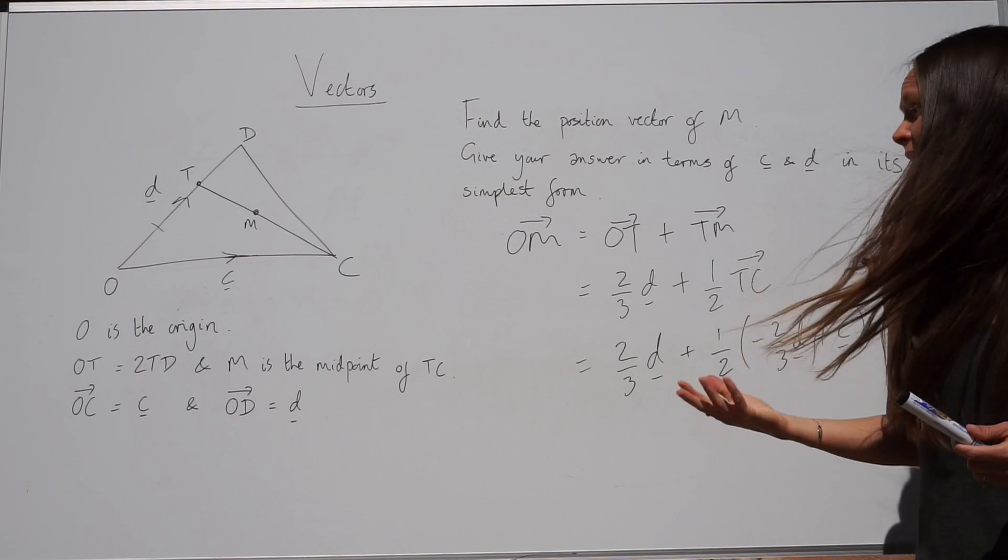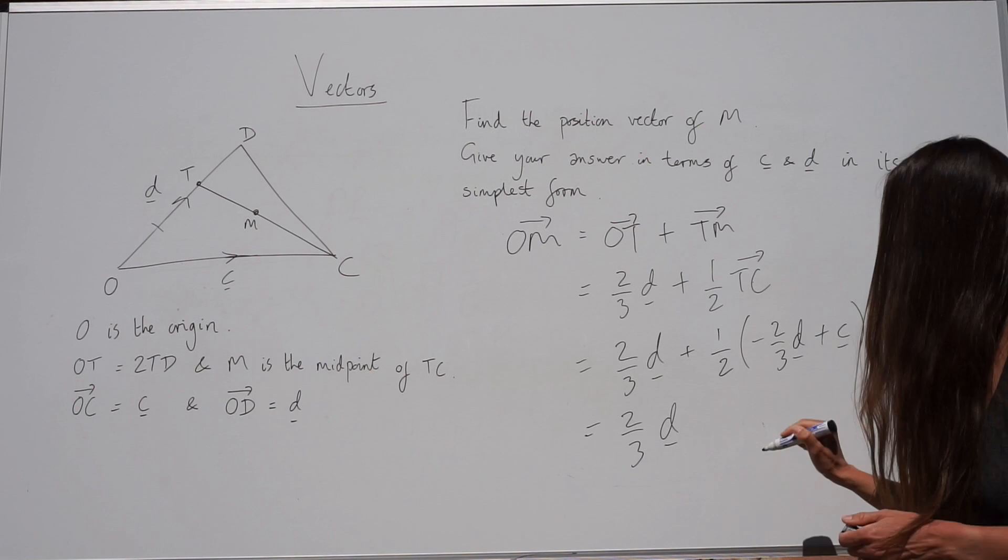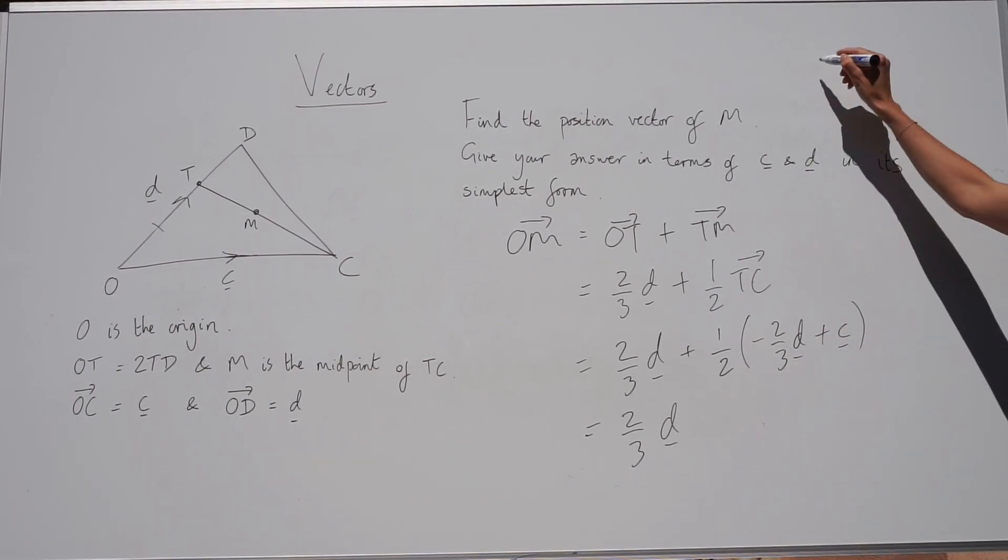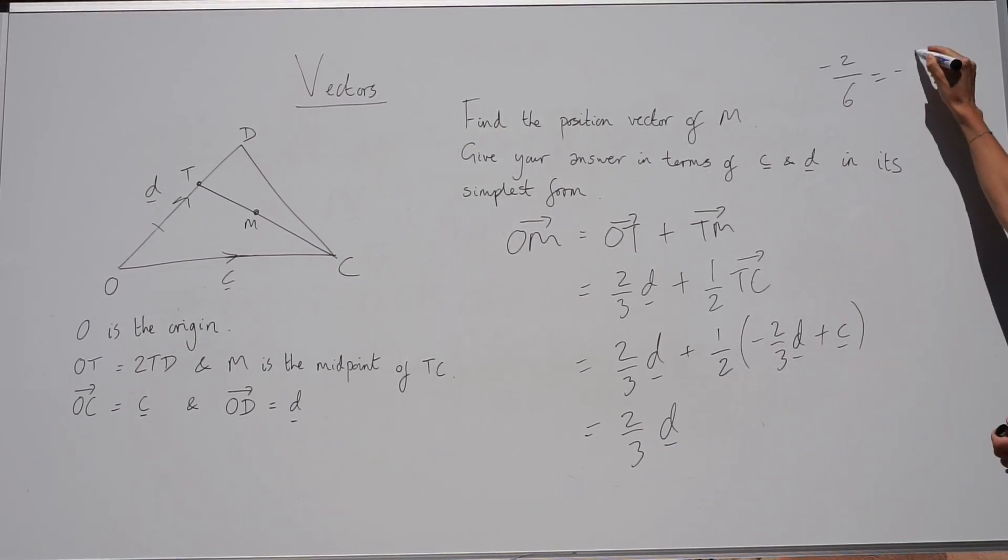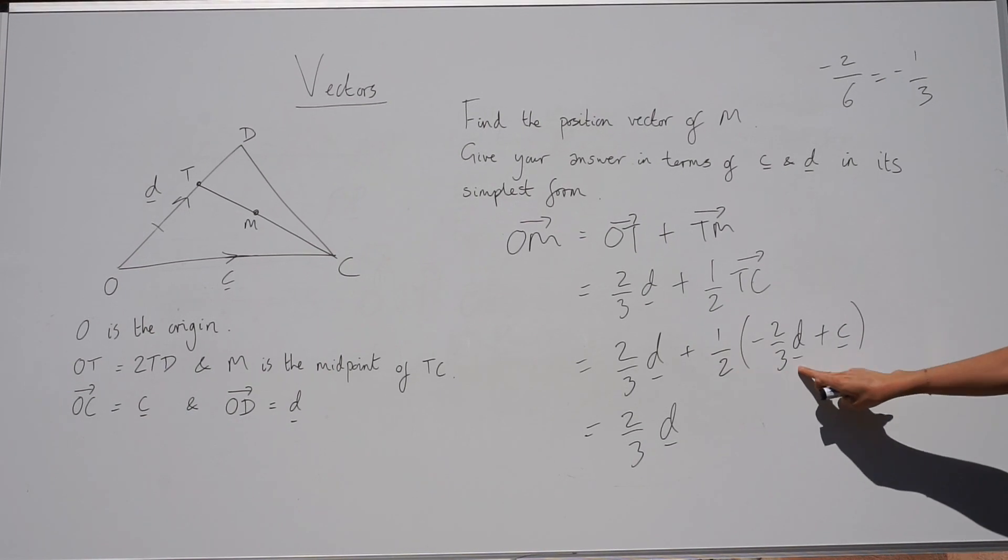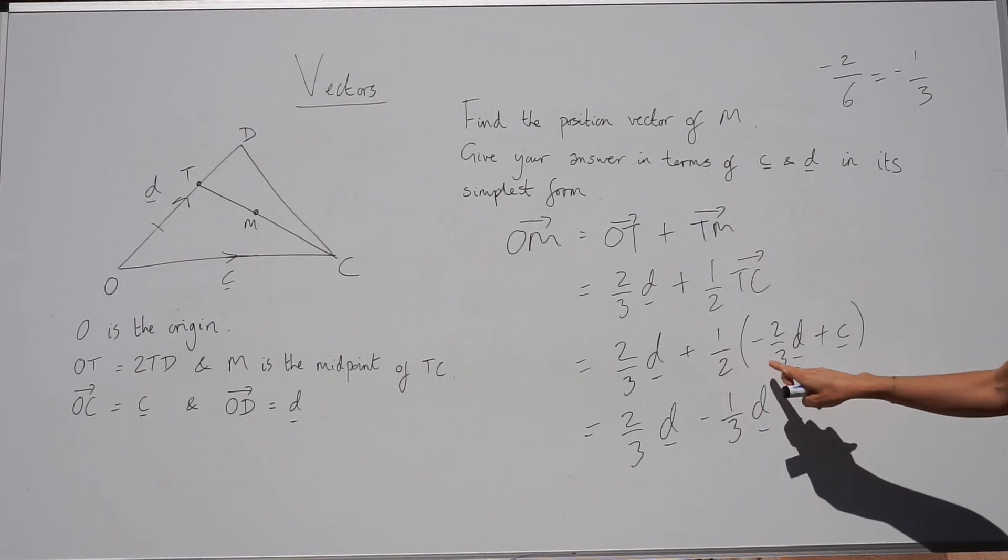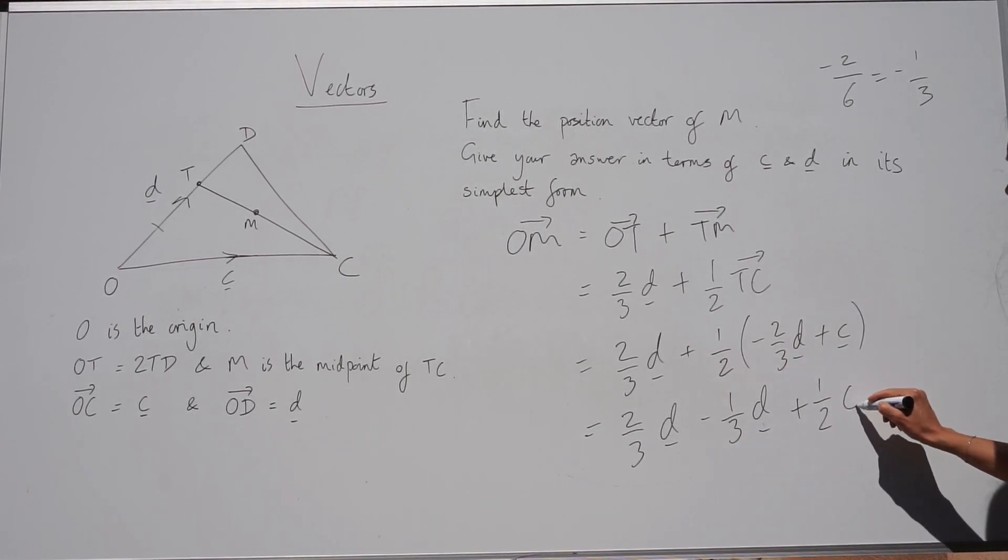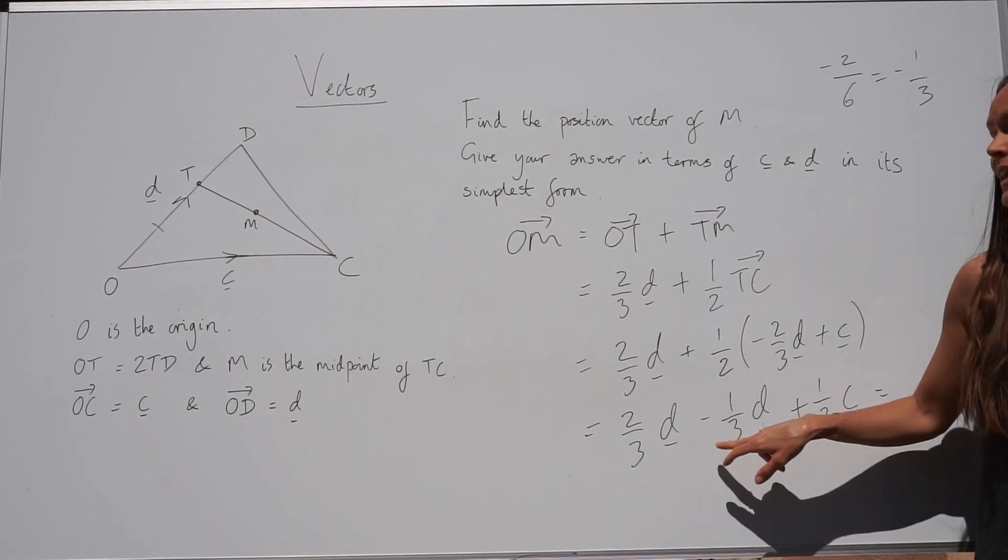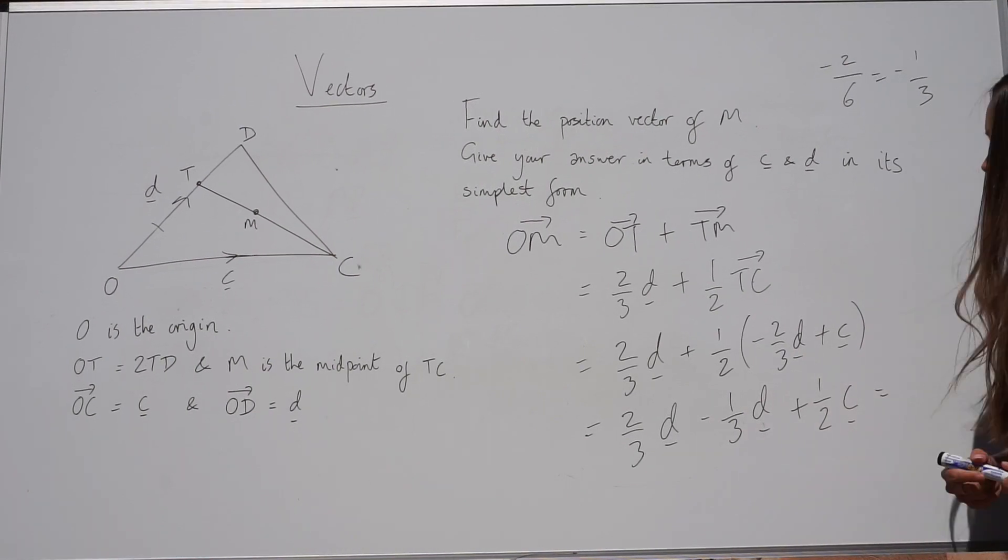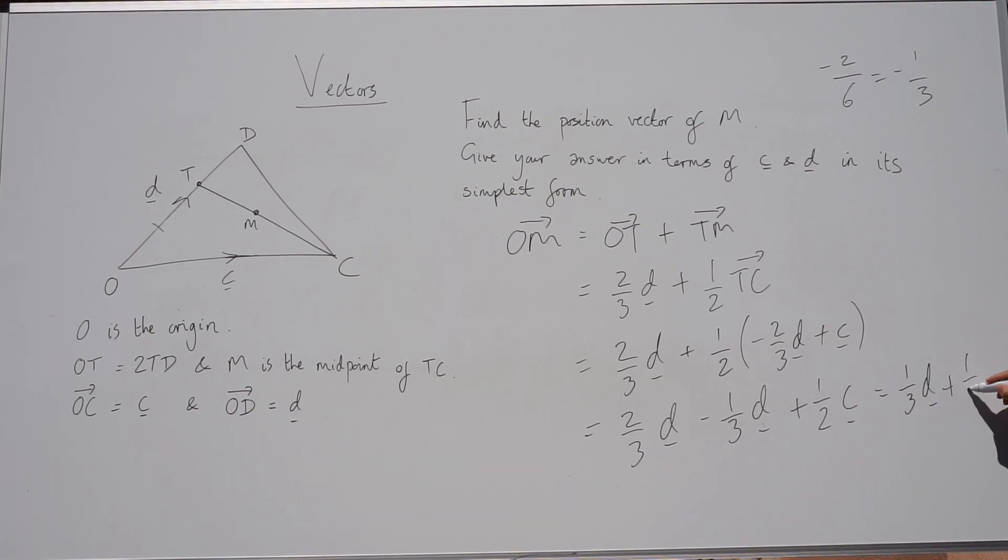Now we have to expand the brackets and simplify to get full marks. So if I multiply a half by negative two-thirds, I get negative two over six, which is a fraction that can be simplified to negative a third. So this becomes negative a third D. And then a half multiplied by C is half C. And we can simplify again because we have two D terms. Two-thirds D take away a third D is one-third D. And there's only one C term, so this just stays the same. So it's a half C.